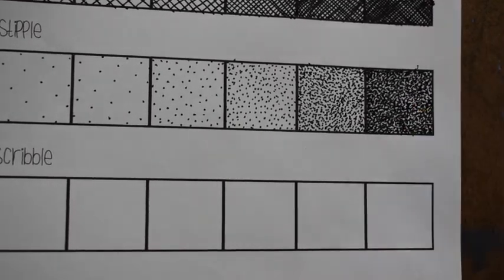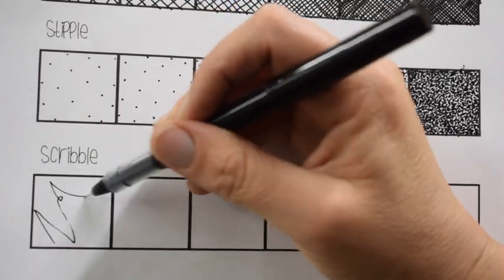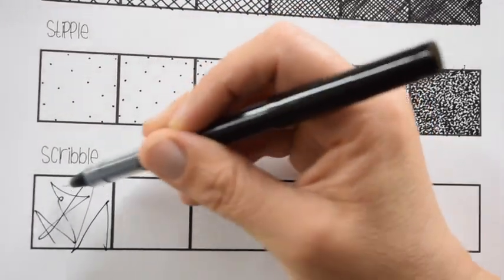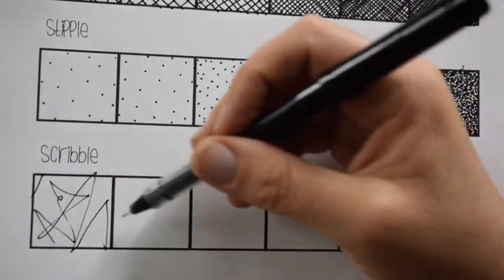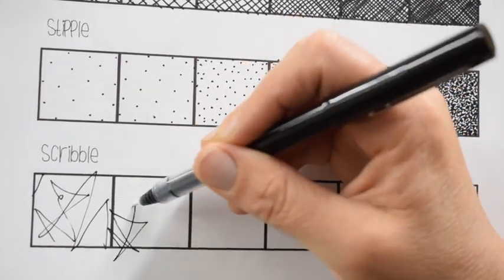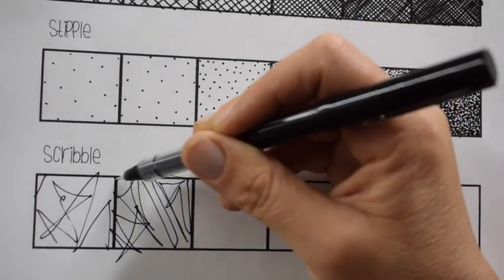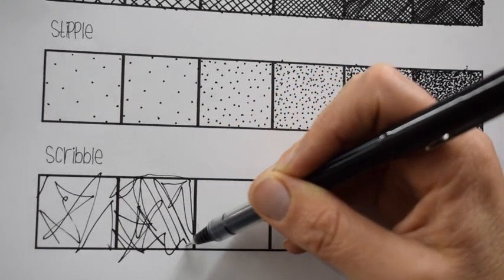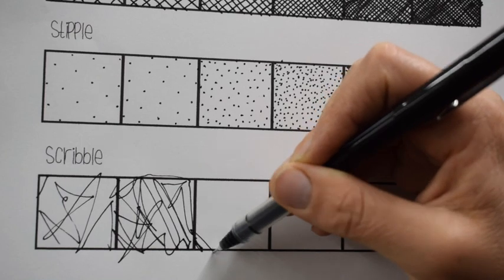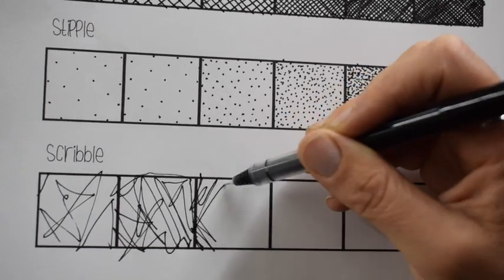Stippling takes a long time but scribble is almost instantaneous and it's kind of fun. I like to make mine erratic. This is a technique which actually works really well and it's one that you guys are probably familiar with from your childhood.